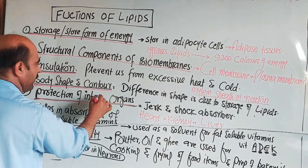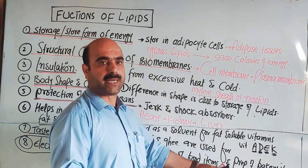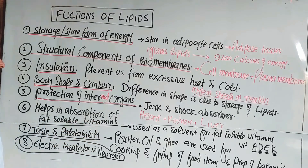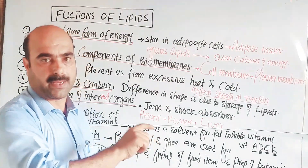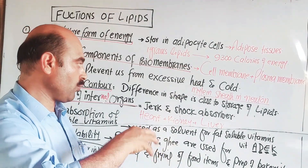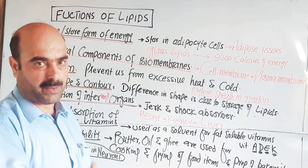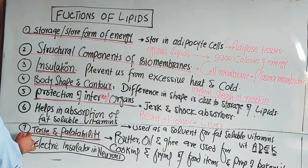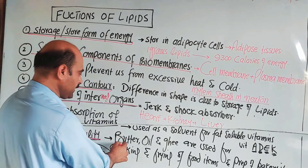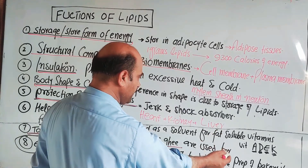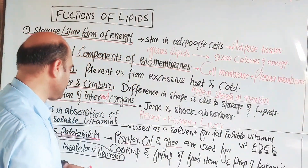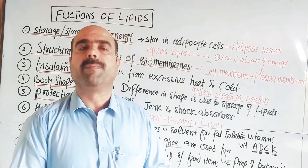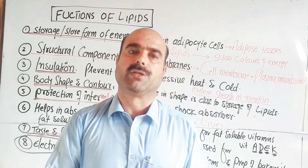Lipids also protect internal organs like the heart, kidneys, and liver from shock and blood pressure. They enable absorption of fat-soluble vitamins A, D, E, and K. For taste and palatability, fats like ghee, butter, and palm oil are used in cooking, frying, and preparation of food items. Thanks a lot for watching the video.